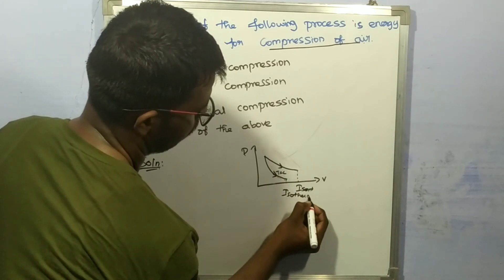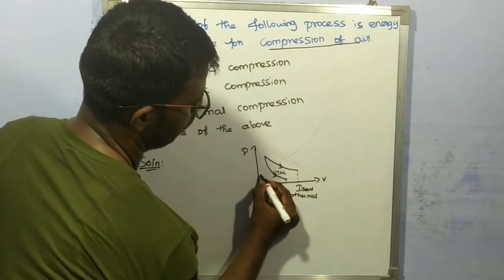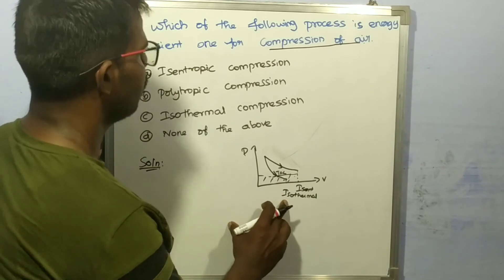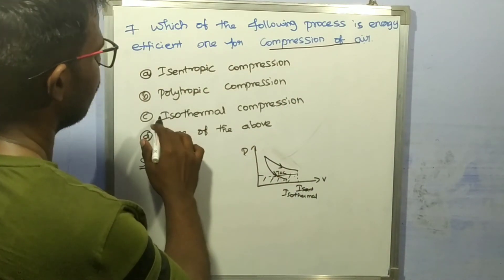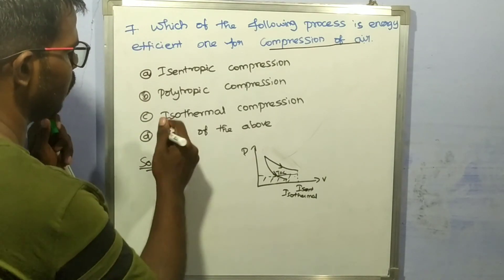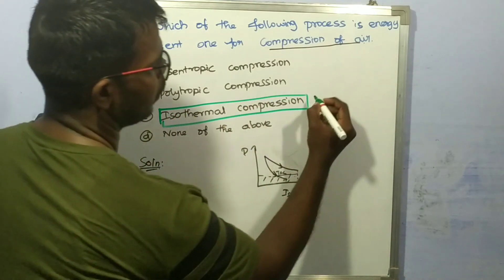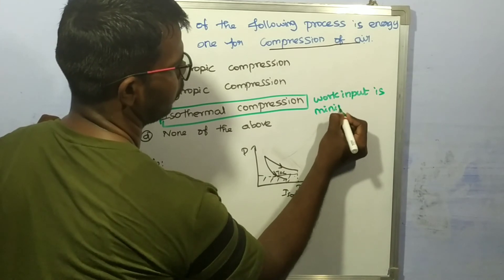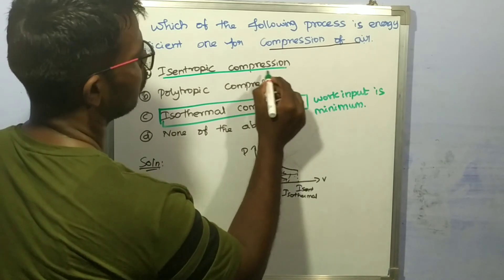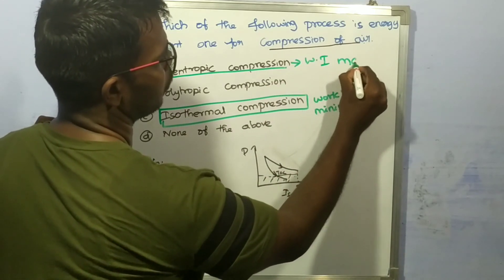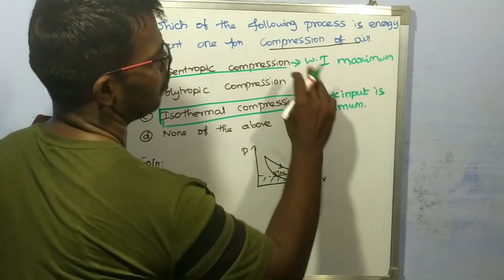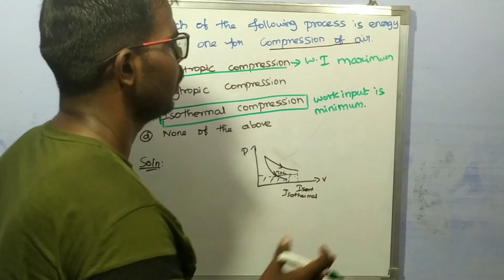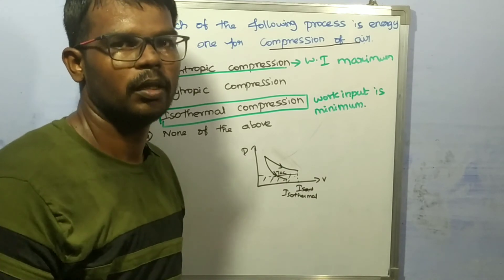For isothermal compression, the work input is minimum. For isentropic compression, the work input is maximum. To minimize energy input during compression, we want the process with the least area on the PV diagram. Isothermal compression requires minimum work input, so it is the most energy efficient. Option C is correct — isothermal compression.